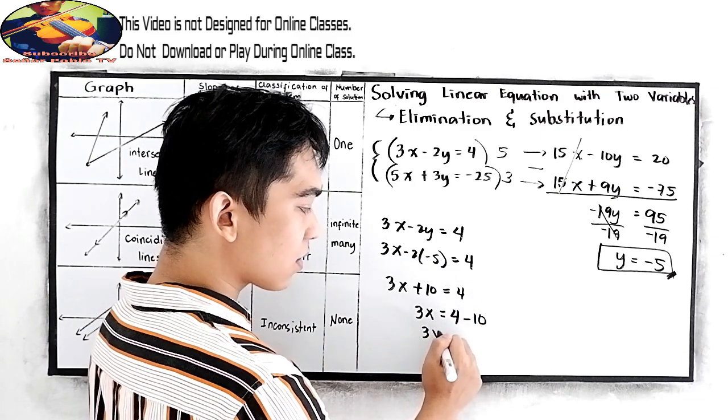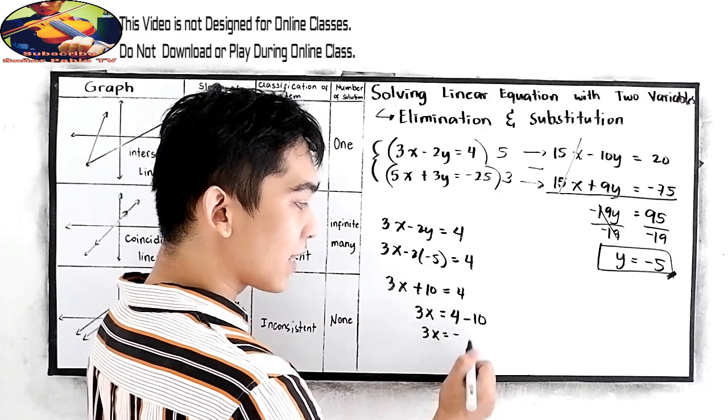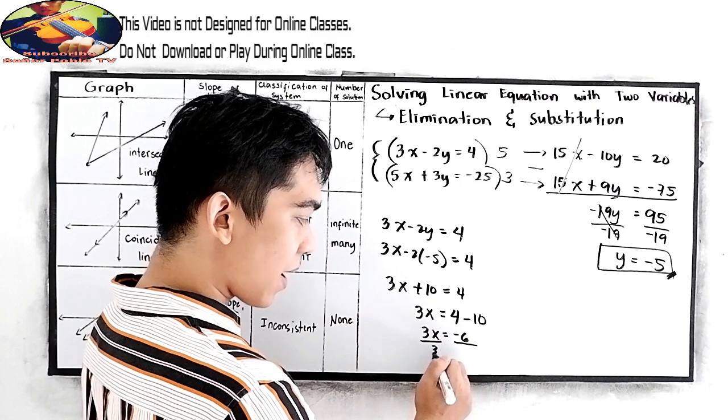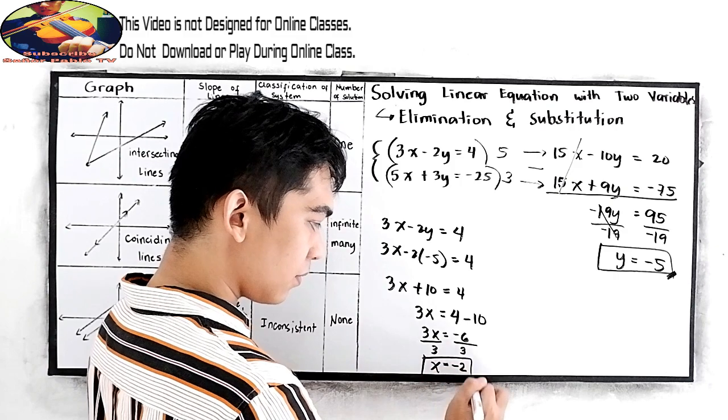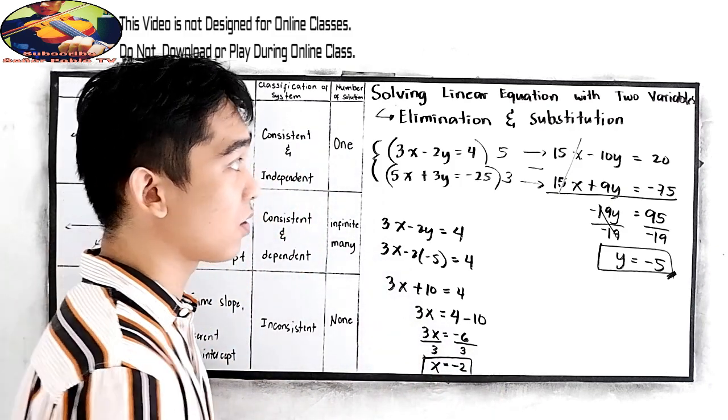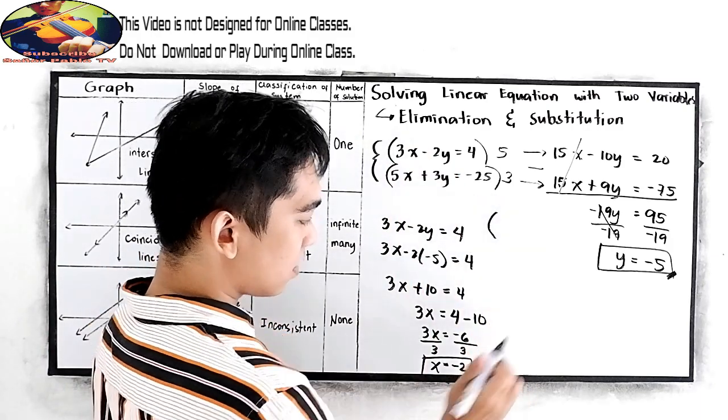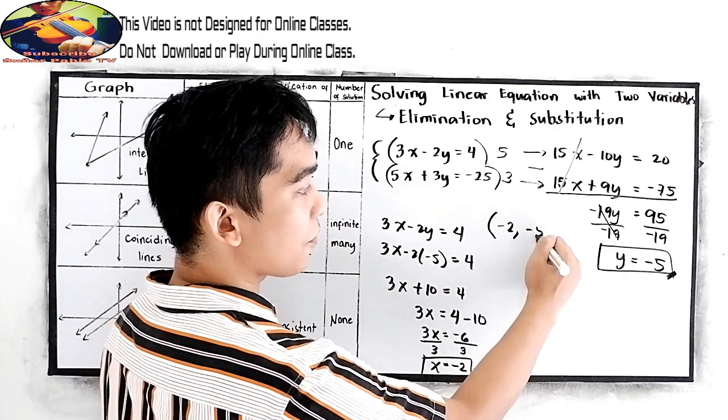So, 3x is equal to 4 minus 10, negative 6. Divide both sides by 3, x is equal to negative 2. So, our x is equal to negative 2. Therefore, the solution of our equations are negative 2 and negative 5.